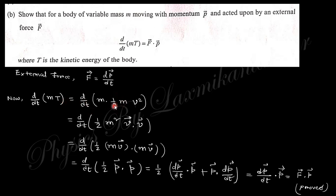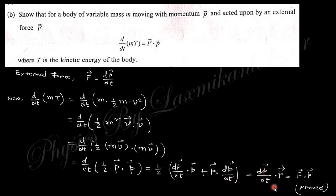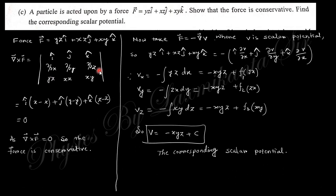So ½mv² = ½m²v² / m, and v² can be written as v⃗·v⃗. This becomes (mv⃗)·(mv⃗) / 2m = p⃗·p⃗ / 2m. Taking the derivative with respect to t: d/dt(p·p) = 2(dp/dt)·p, and the factor of ½ and 2 cancel, giving (dp/dt)·p = F·p. Since dp/dt is the force, this proves that the expression equals F·p, i.e., force dot linear momentum.